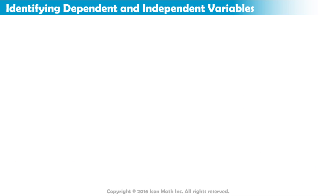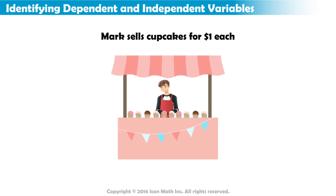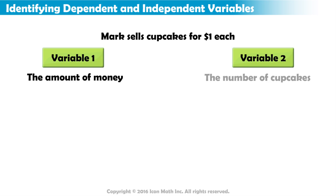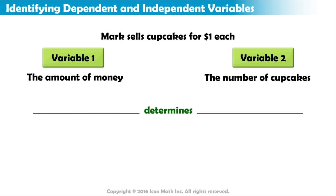Now, let's identify the dependent and independent variable in a different situation. Mark sells cupcakes for $1 each. The two variables in this situation are the amount of money Mark earns and the number of cupcakes he sells. It is helpful to identify which is independent and which is dependent.